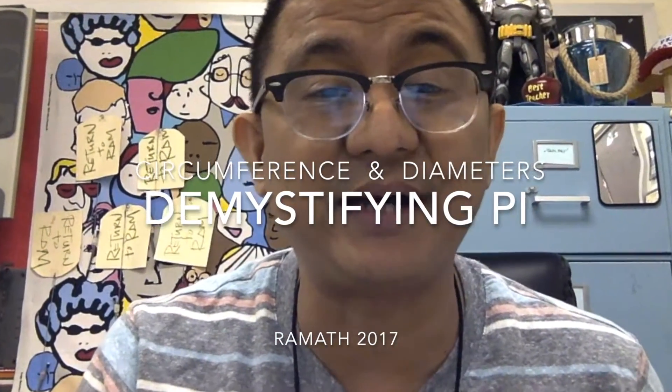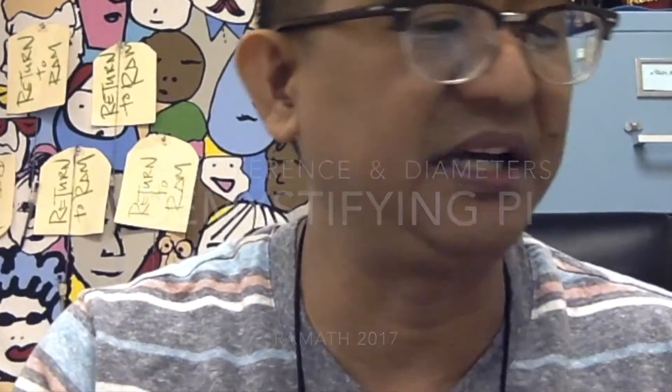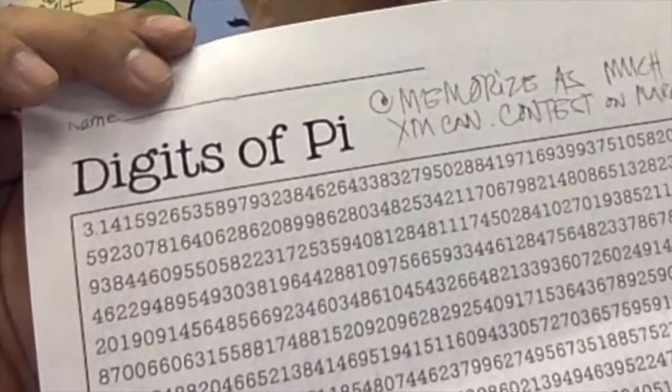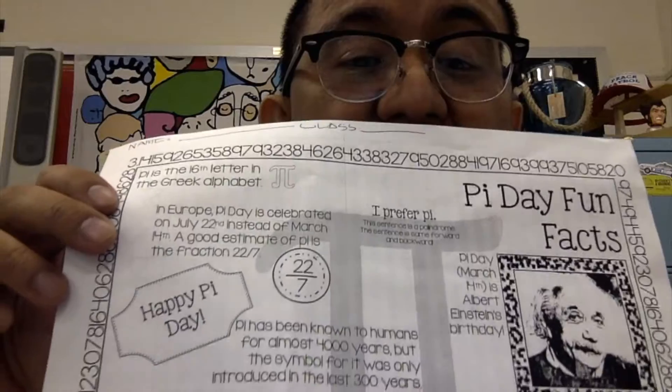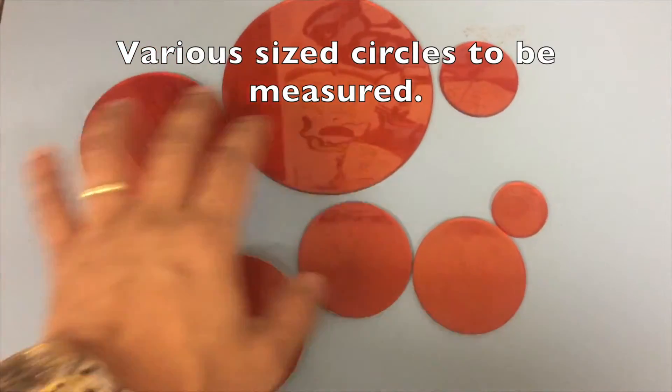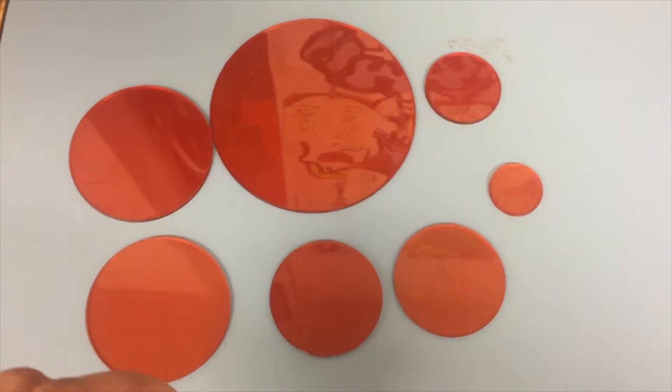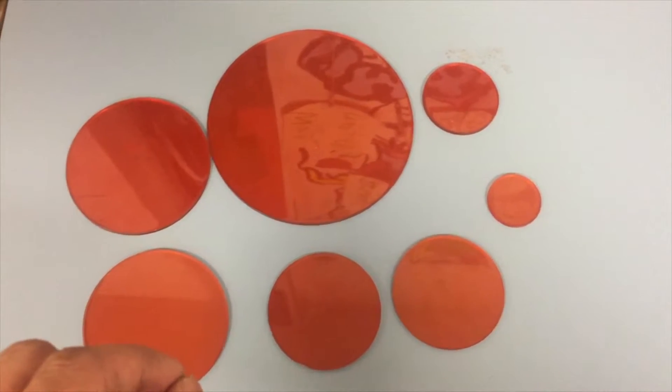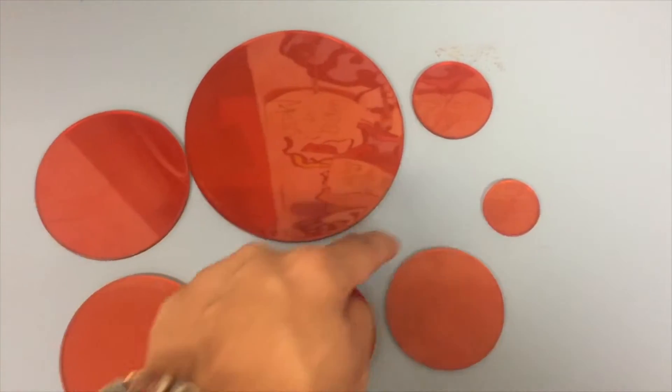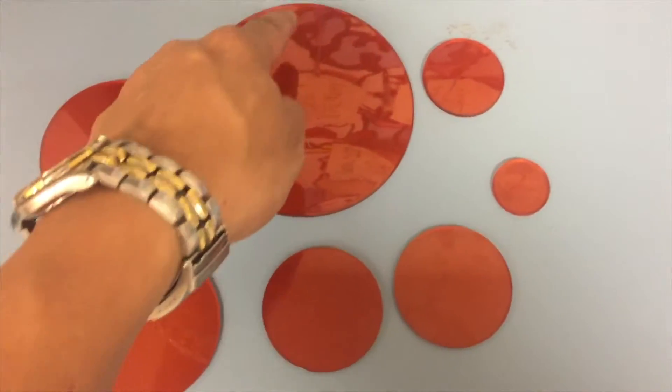We always learn about pi. Teachers would say that pi is this long number, this symbol, but what actually is pi? That's what we're going to demystify. I got various circles with different sizes and I asked each of my groups of students to measure the circumference and the diameter.